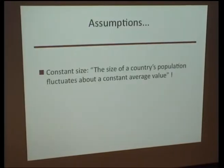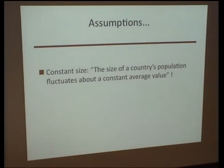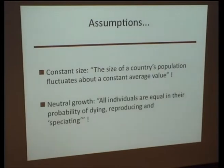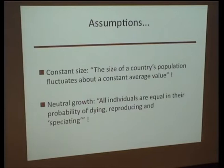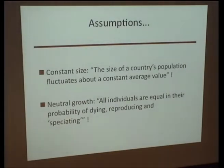Why? Let's look at our assumptions. There are two assumptions that may be wrong. One is clearly wrong: the assumption that the population is kept at constant size. We know that's not true, because human population has been growing very fast in the last couple of hundred years. The other assumption — neutral growth, that all individuals are equal — is a little more tricky. Maybe we are not all equal, and this is not a racist statement; it has a very specific meaning.